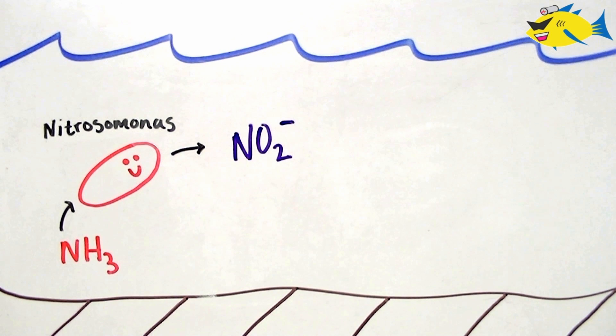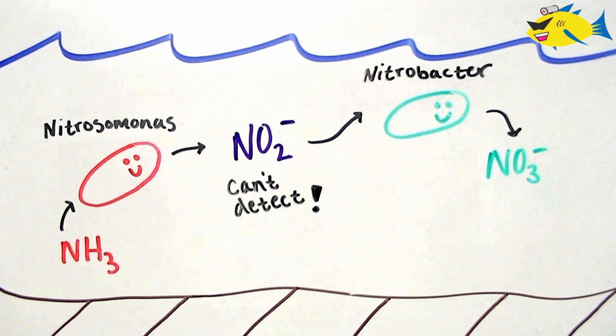To review, nitrite is a moderately toxic compound which comes primarily from the oxidation of ammonia by bacteria in the genus Nitrosomonas. It's generally short-lived in the aquarium because it's quickly oxidized to nitrate by bacteria in the genus Nitrobacter.